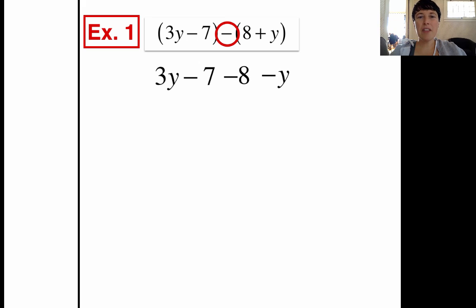Then I'm going to put things together that are like terms. The 3y and the minus y are like terms. The negative 7 and the minus 8 are like terms, and we're going to combine those like terms. 3y, take away a y, is 2y. And negative 7, take away 8, is keep, change, change, KCC.